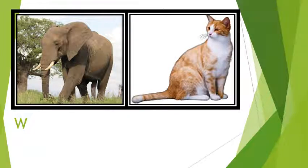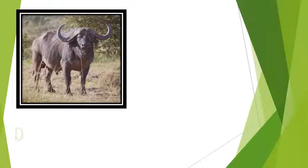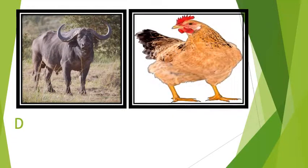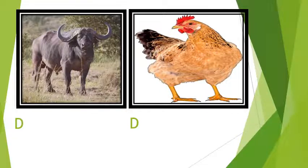Next picture is of a cat. Cat is a pet animal, so P will come. Next picture is of a buffalo. Buffalo is a domestic animal, so D will come. And at the last, picture of hen is here. It is also a domestic animal, so D will come. So in these three categories we divide the animals: wild animals, domestic animals, and pet animals.